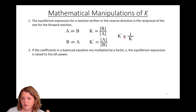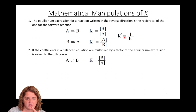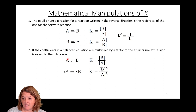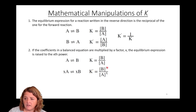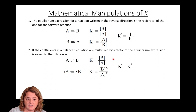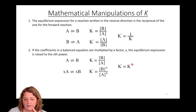The second thing we can do: if we multiply a balanced reaction through by some factor X, the equilibrium constant is going to be raised to that X power. Going back to the simple A to B equilibrium constant B over A — if I multiply through by two, three, or one half, this K prime would be B raised to the X power divided by A raised to the X power, which is just K raised to the X power.